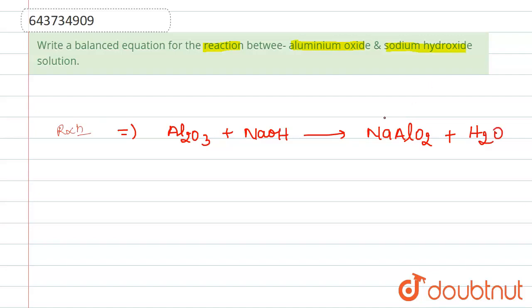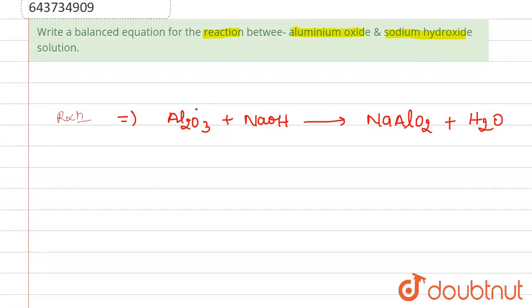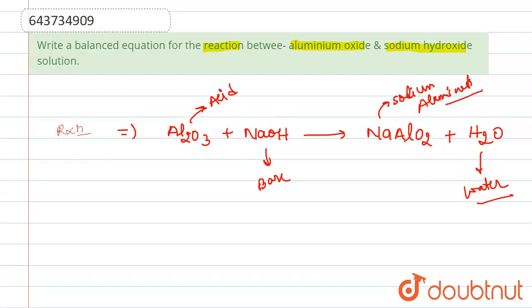So it is an acid-base reaction basically. Al2O3 acts as acid here, and NaOH will act as base here. The salt that is formed here is actually sodium aluminate, so it will form sodium aluminate plus water. When acid reacts with base, it forms salt and water.